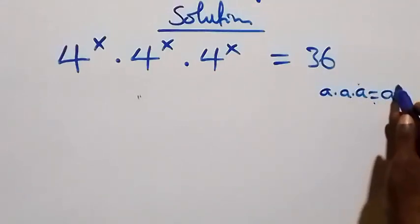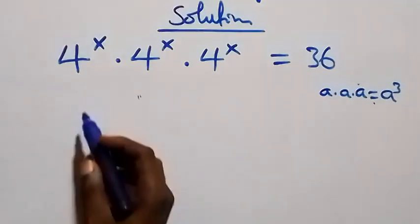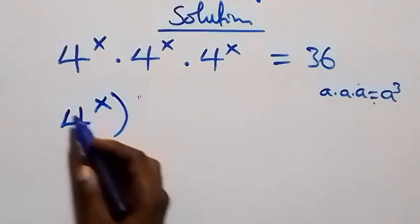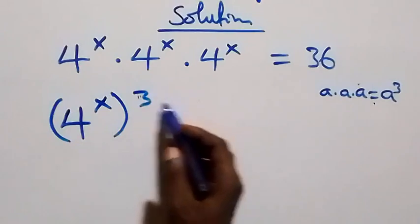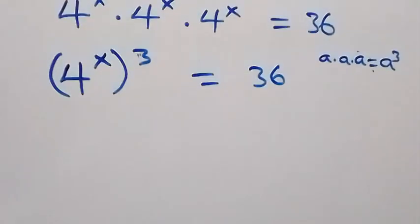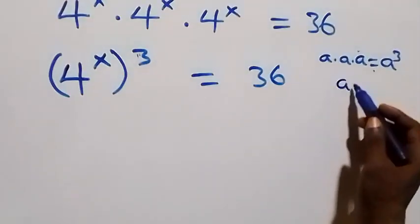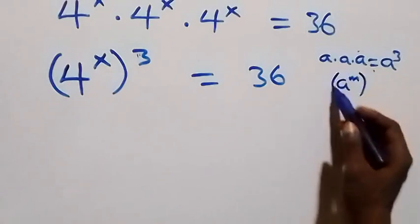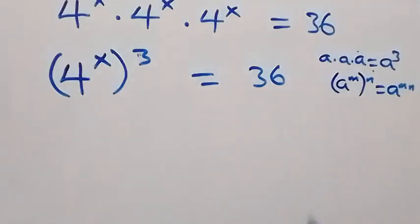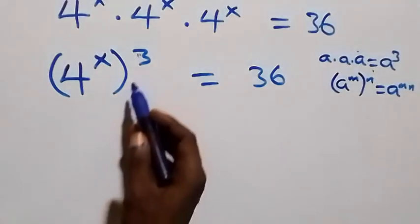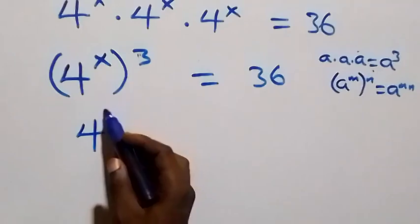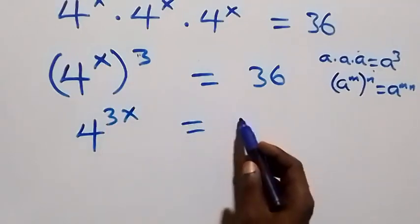This follows when we have a times a times a, which we can write as a raised to power 3. So this becomes 4 raised to power x, then raised to power 3, equals 36. From the law of indices, a raised to power m raised to power n is the same as a raised to power m·n, so the powers multiply and we have 4 raised to power 3x equals 36.